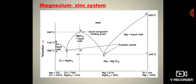In the previous class we discussed phase, component, degrees of freedom, Gibbs phase rule and applications of phase rule in one component system — that is, the water system — and applications in two component system, that is, silver-lead system and potassium iodide-water system. Now in today's class we are discussing phase equilibria for the two component system.